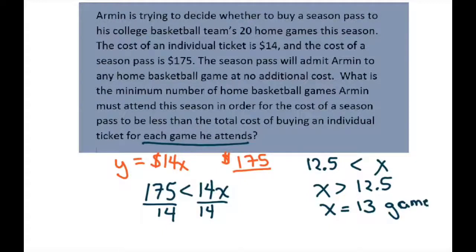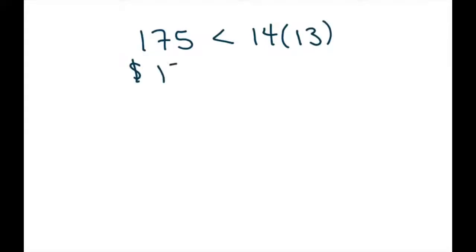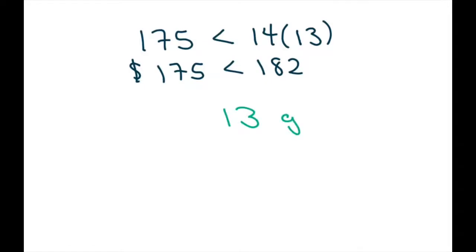If you plug in 13 games into this, you'd get 175 is less than 14 times 13. In dollar terms, that would be 175 is less than 182. So the answer is 13 games he must attend for the season pass to cost less.